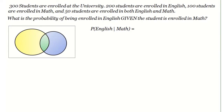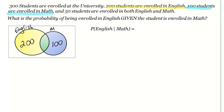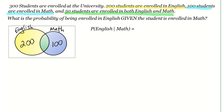We can use a Venn diagram to help us solve this problem. Let's first fill in the circles of our Venn diagram. We have 200 students enrolled in English — let's put 200 in the yellow circle and label it English. We have 100 students enrolled in math, so we'll put 100 in the blue circle and label it math. And then we have the green intersection for students enrolled in both math and English, which is 50.